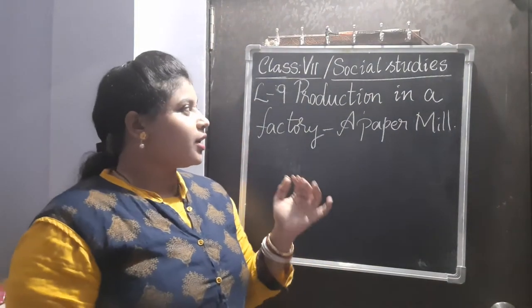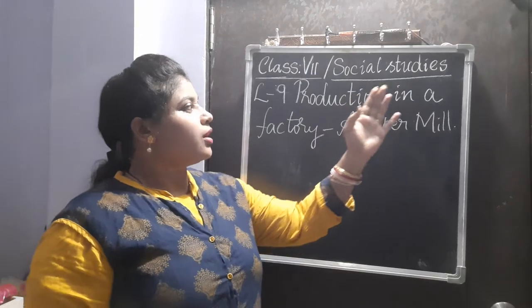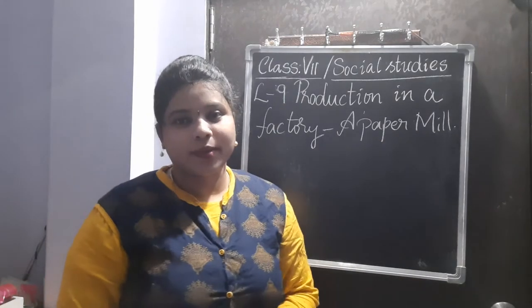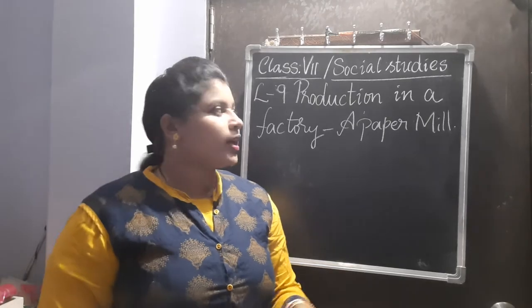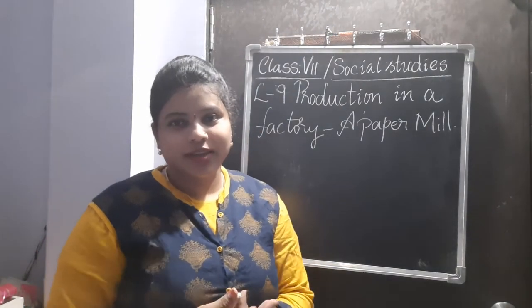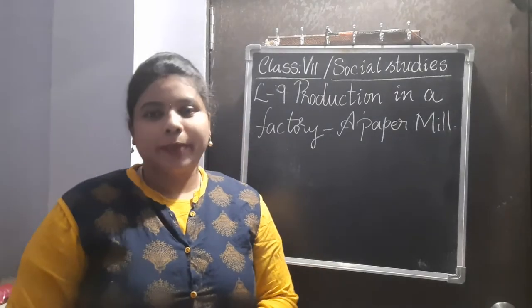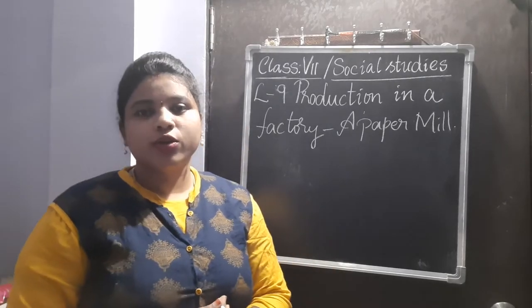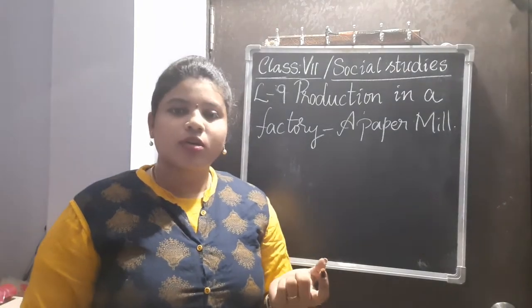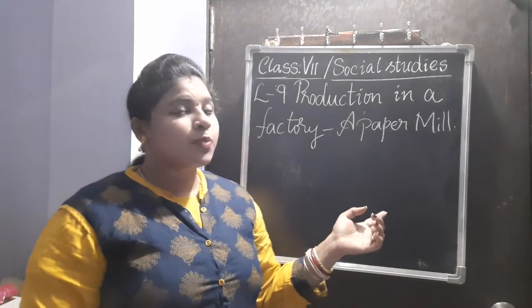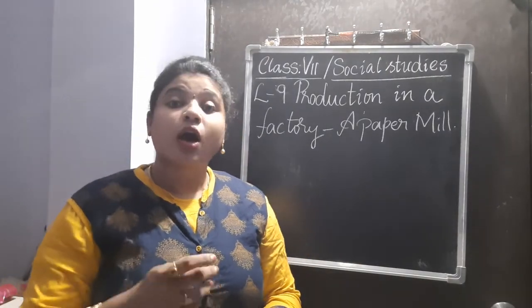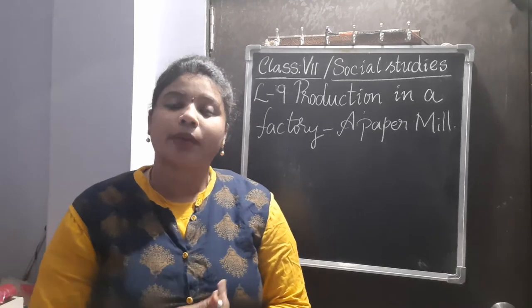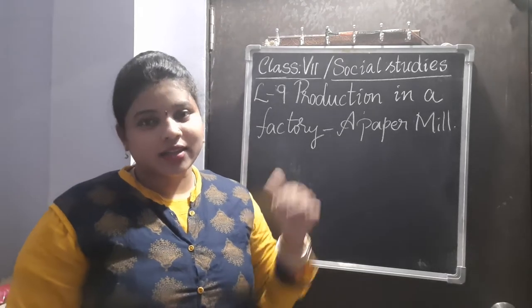By the lesson itself you can understand that we are going to discuss about the production in a factory - how production takes place in a factory. We are going to discuss especially about the paper mill. We all know we have a paper mill in Rajmandri. Here the paper mill produces paper. During the production of paper there are many stages. We shall all learn about this in detail in this lesson.